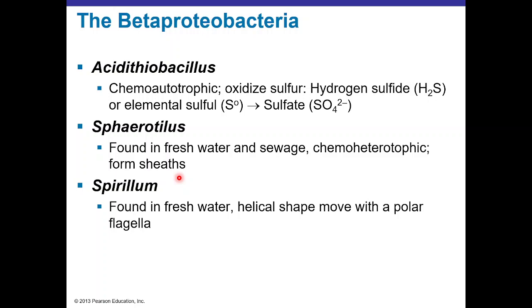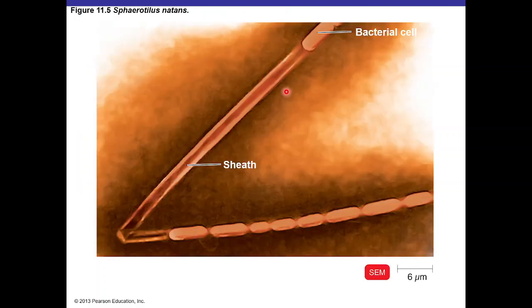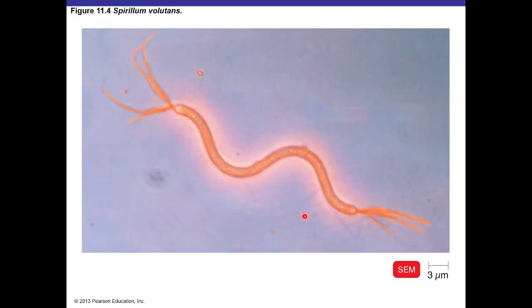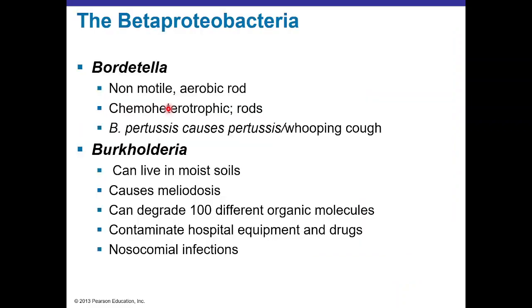Sphaerotilus natans forms sheets where bacterial cells group together, helping to protect the bacteria and accumulate nutrients in fresh water and sewage where nutrients may be low. Aquaspirillum pollutans has a polar flagellum, a spiral shape, and also lives in aquatic environments.